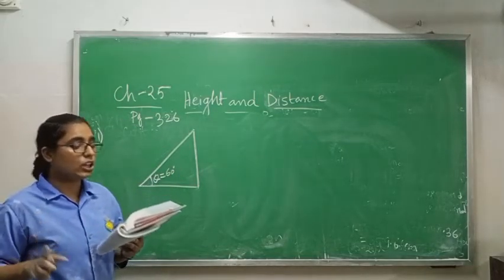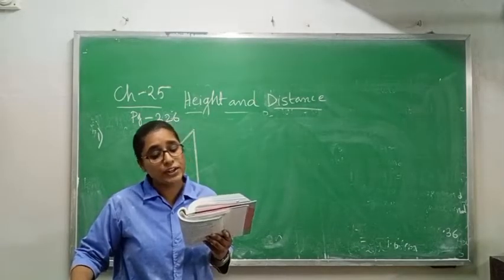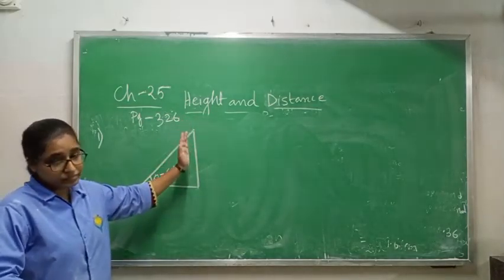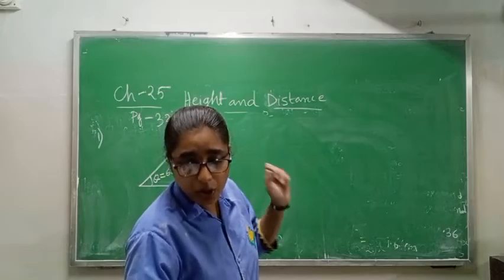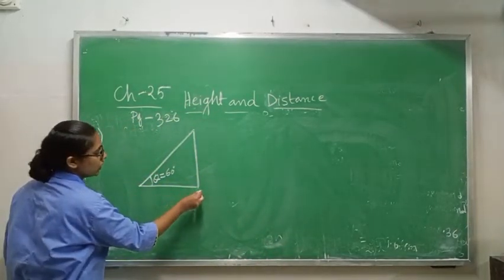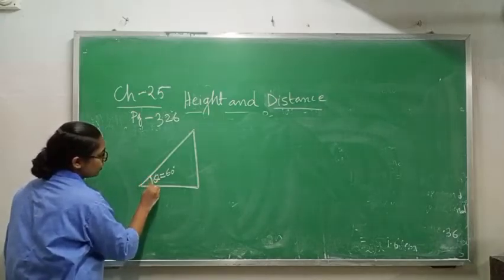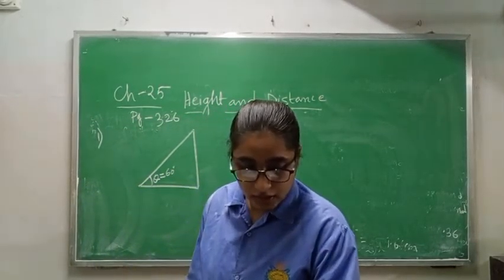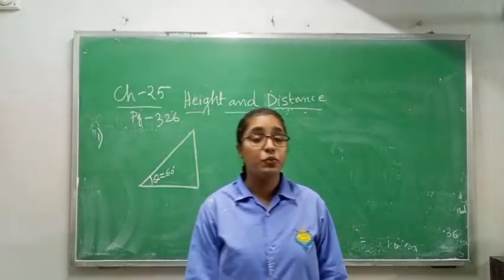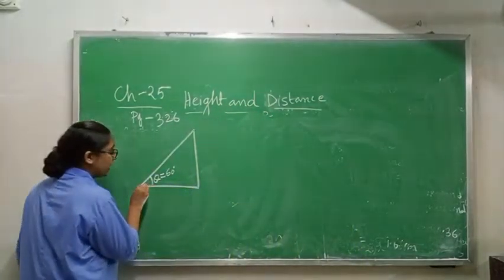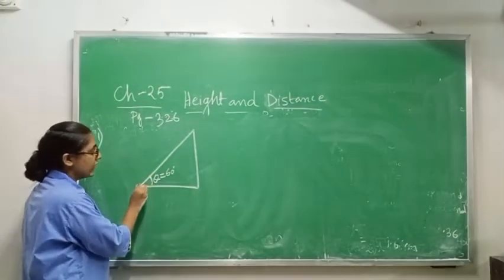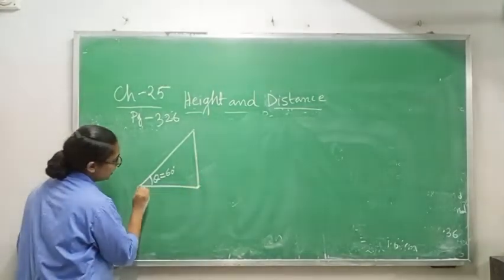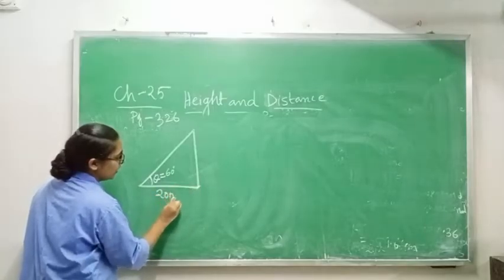The angle of elevation of the top of a coconut tree from a point on the ground is 60°. This is your ground, and from the point it is making angle 60°. The theta value is given as 60°, and the point is 20 meters away from the foot of the tree. From here to here, the distance is 20 meters.